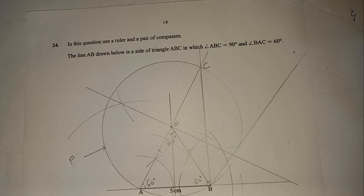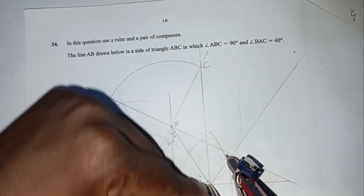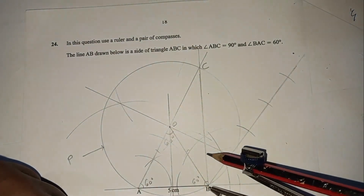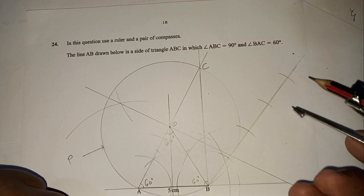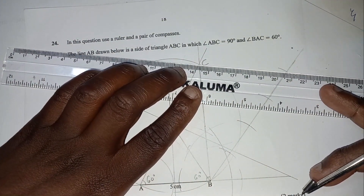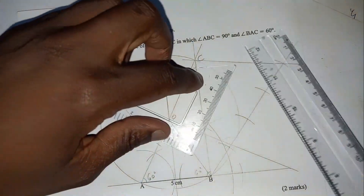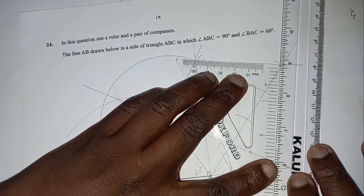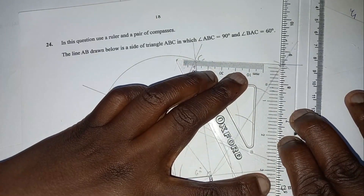Then we join the last point to C. Using a set square, we slide it to draw parallel lines back to BC, marking off each division. Since we want three quarters, we slide along to the third division. This is how we divide that line proportionally into four equal parts — we use the set square and slide it to find the first, second, and third divisions on line BC.